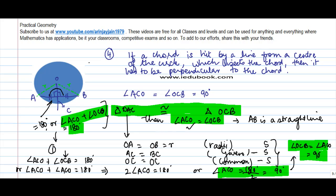So thus, we found or we conclude that OC, this line, is perpendicular to AB. And hence the theorem that if a chord is hit by a line from the center of the circle which bisects the chord, means divided into two equal parts, then it has to be perpendicular to the chord.